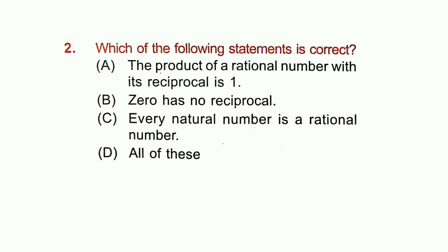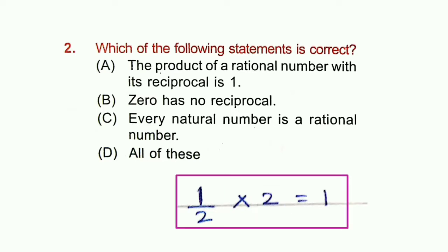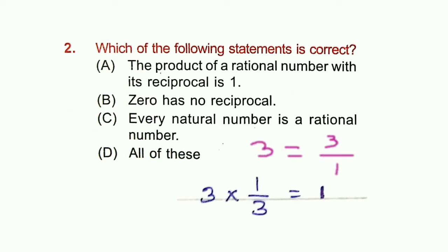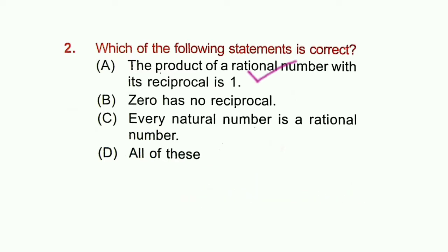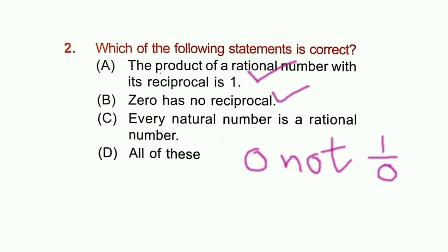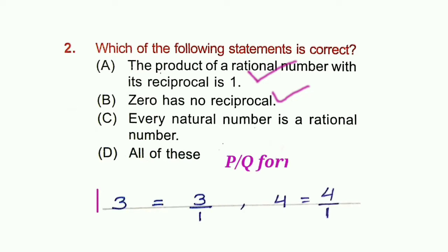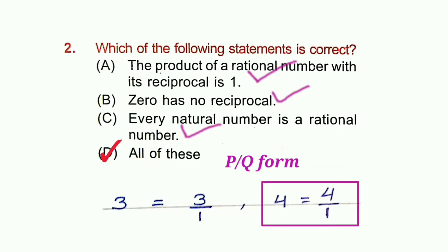Question 2: Which of the following statements is correct? Option A: The product of a rational number with its reciprocal is 1. Example: 1/2 × 2 = 1; 3 × 1/3 = 1. This is correct. Option B: 0 has no reciprocal — also correct, since 1/0 is undefined. Option C: Every natural number is a rational number — also correct (e.g., 3 = 3/1). So option D (all of these) is correct.